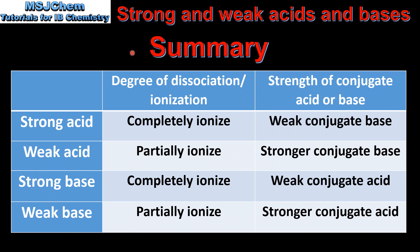Let's end with a summary. Here we have the degree of dissociation or ionization and the strength of the conjugate acid or base. A strong acid will completely ionize in solution and it has a weak conjugate base. A weak acid will partially ionize in solution and it has a stronger conjugate base. A strong base will completely ionize in solution and it has a weak conjugate acid. A weak base will partially ionize in solution and it has a stronger conjugate acid.